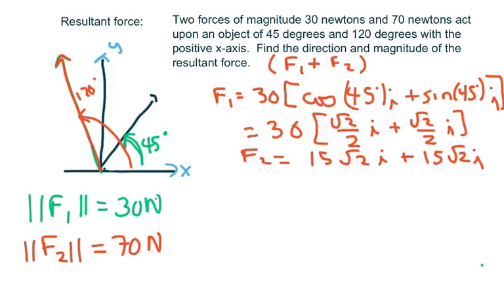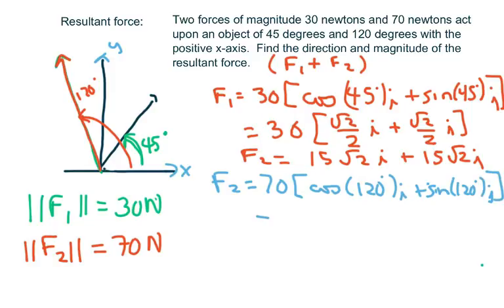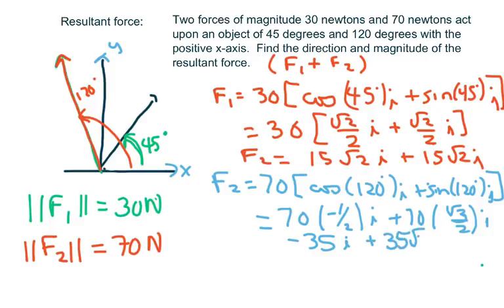Force two is very similar. Force two would be 70 times cosine of 120 degrees i plus sine of 120 degrees j. And when you work this out, we're going to get 70 times negative 1 half i plus 70 times root 3 over 2 j. And that's going to give you negative 35 i plus 35 root 3 j.